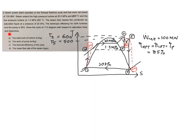Next, we determine the total turbine work, which is the work of the high pressure turbine plus the work of the low pressure turbine. For the high pressure turbine this is between states 3 and 4, but you must consider the actual state 4a. For the low pressure turbine, it is between state 5 and the actual state 6a.